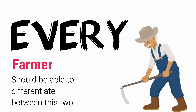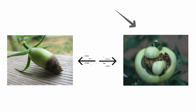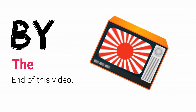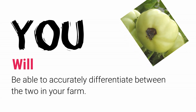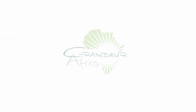Every farmer should be able to differentiate between these two. Can you correctly point out which is blossom end rot and which is cat facing? These two physiological conditions confuse a lot of farmers, and by the end of this video you will be able to accurately differentiate between the two in your farm.